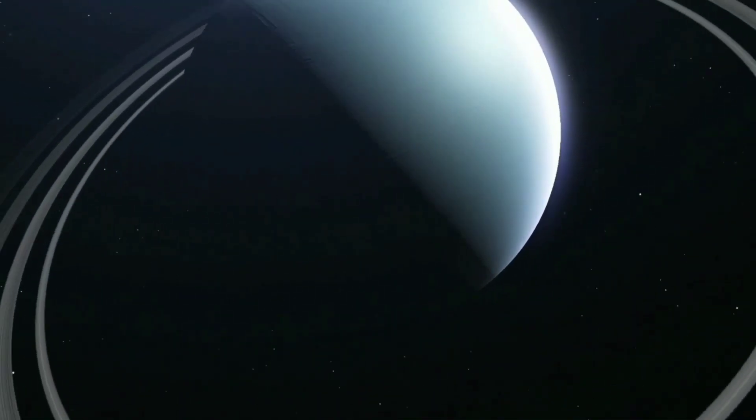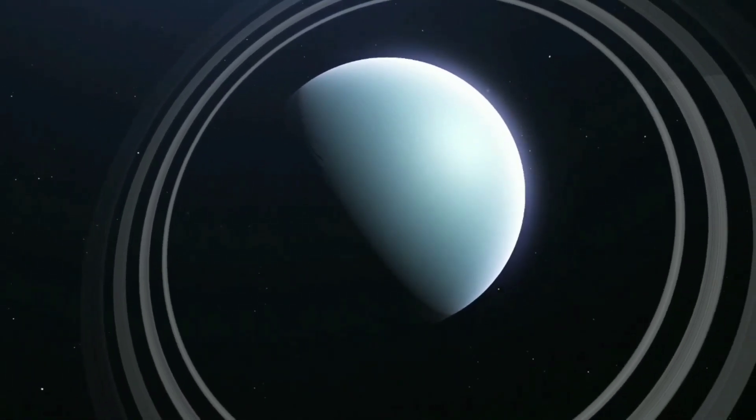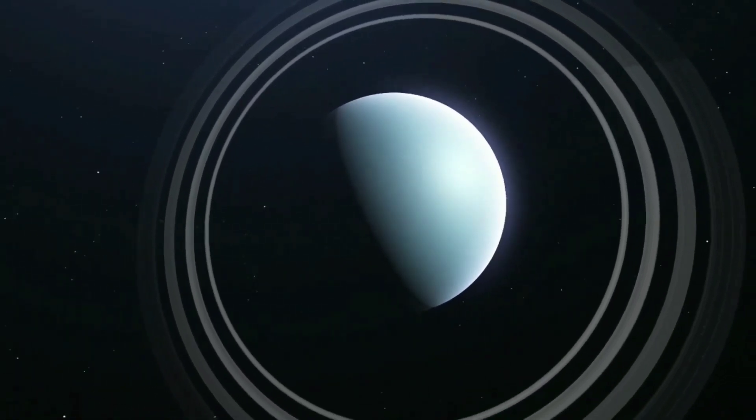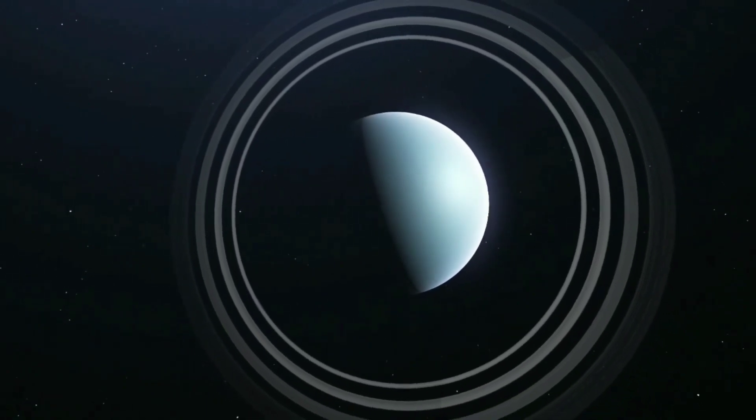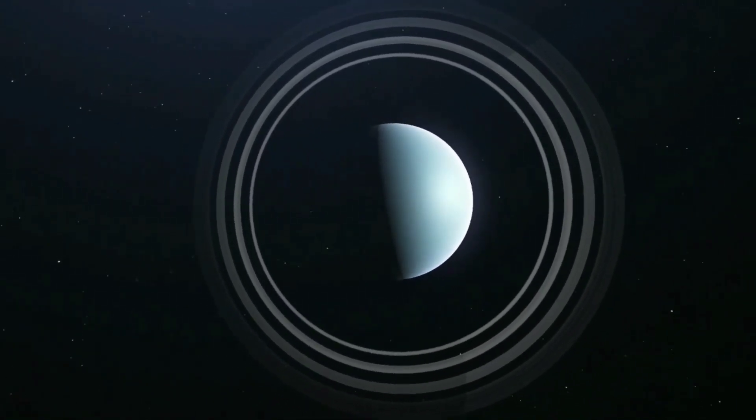Yes, Uranus is known as the green planet of the solar system. The reason is that its atmosphere is mainly composed of hydrogen, helium, and methane.